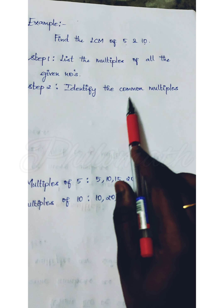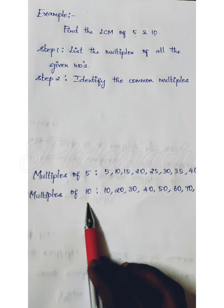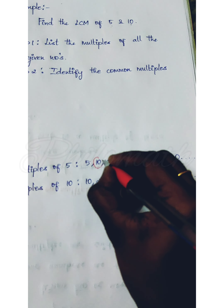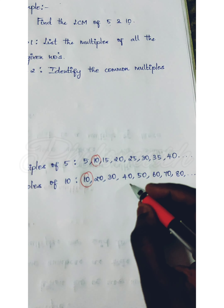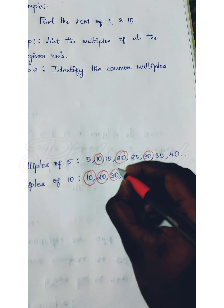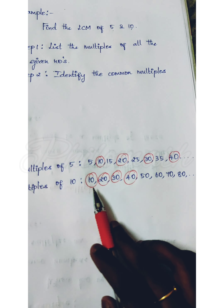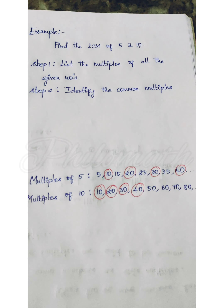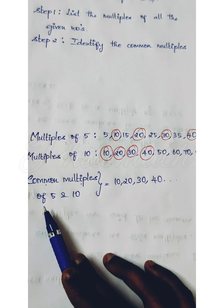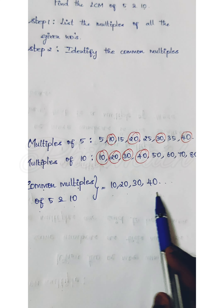Step two: identify the common multiples. We have multiples of 5 and multiples of 10 — in these we need to find the common multiples. Here 10 and 10 are the same, and 20, 30, 40, and so on. So the common multiples of 5 and 10 are 10, 20, 30, 40, and so on.